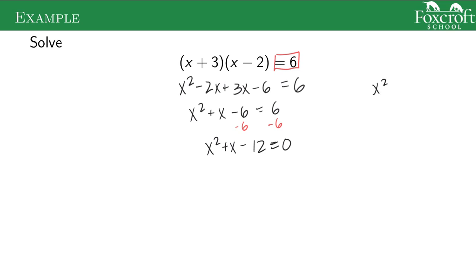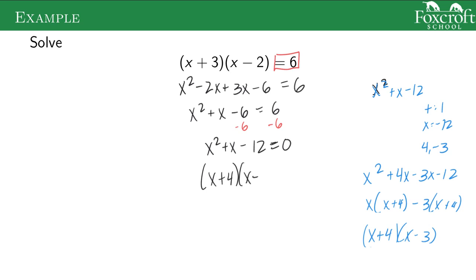Now I factor x squared plus x minus 12. Add to 1, multiply to negative 12. That's going to be positive 4 and negative 3. Factoring out the greatest common factors and unfoiling gets me there. So x plus 4 times x minus 3 equals 0. Now I do the 0 product property. Subtract 4 from both sides to get my first answer. Add 3 to both sides to get my second answer.